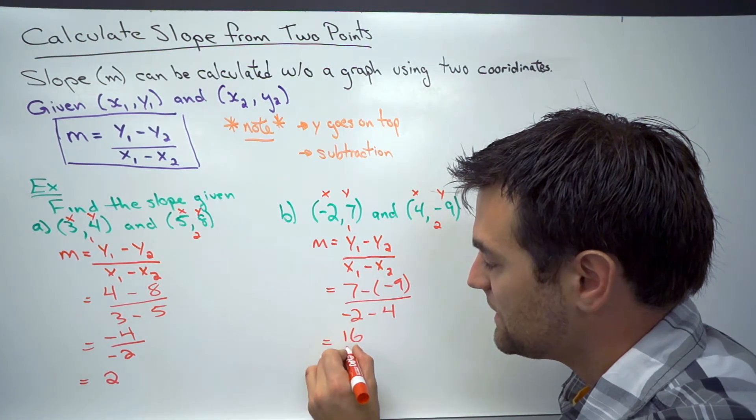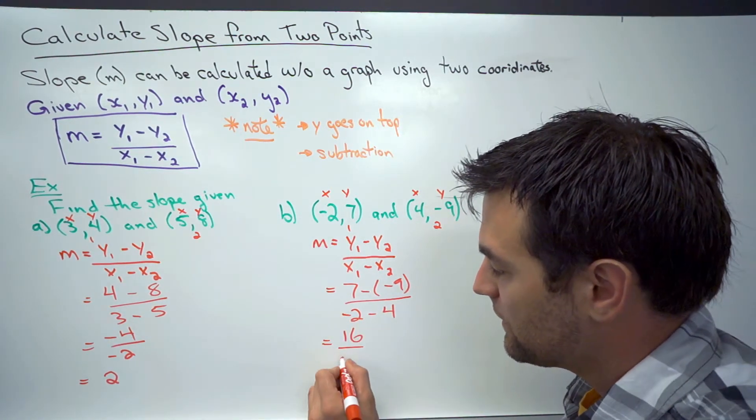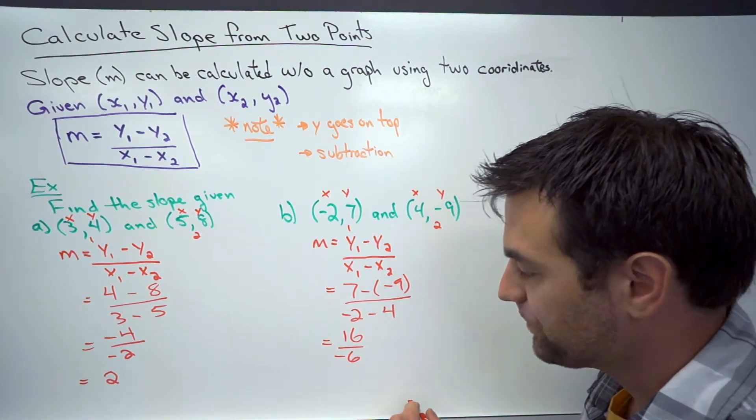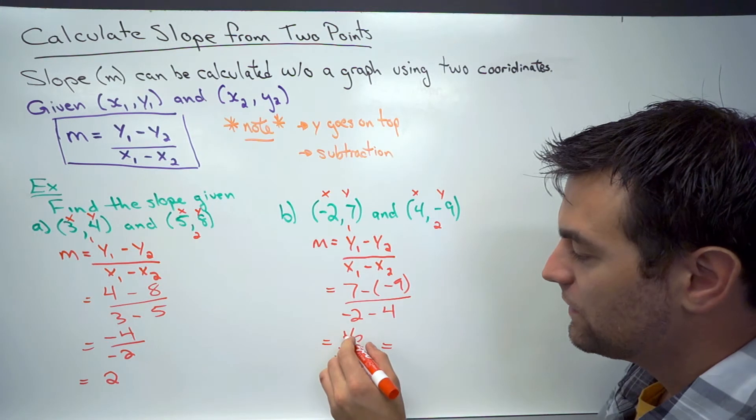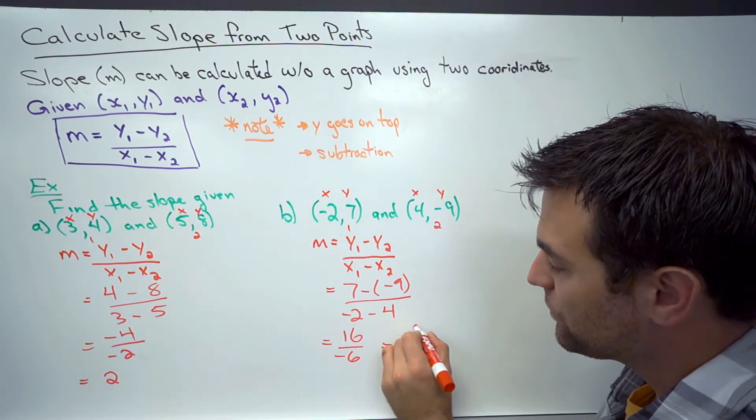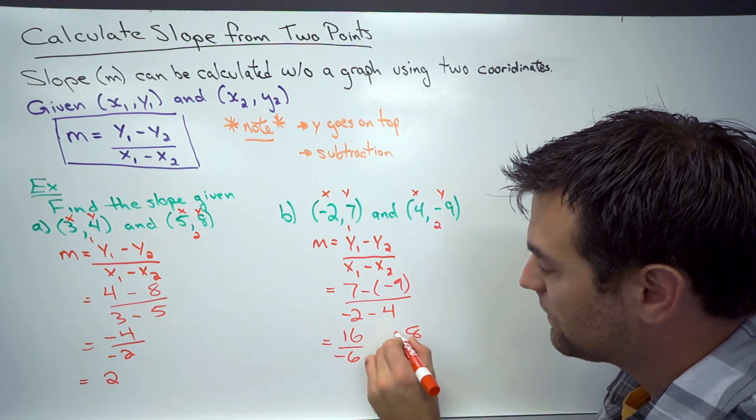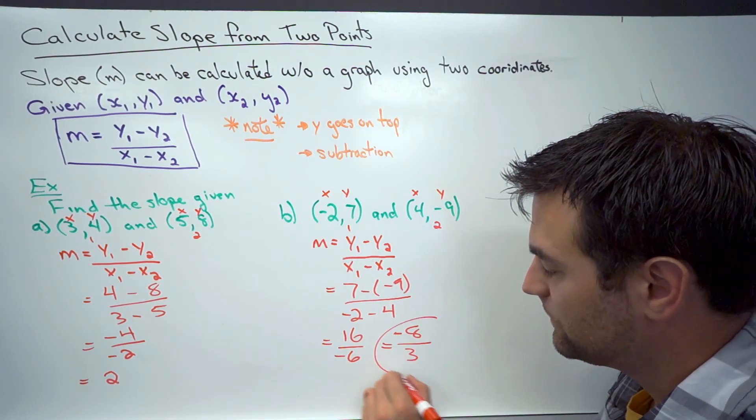So now 7 minus negative 9 is the same as 7 plus 9. That's 16 over negative 2 minus 4, that's negative 6. And that there simplifies down to 8 over 3. Negative 8 over 3. There's my slope.